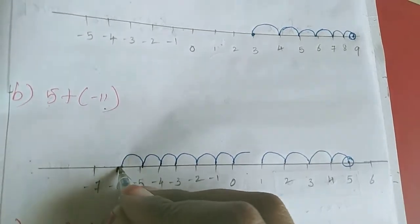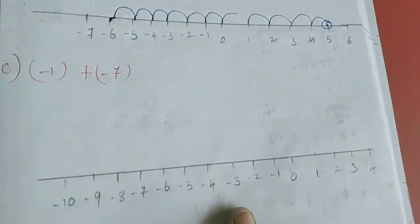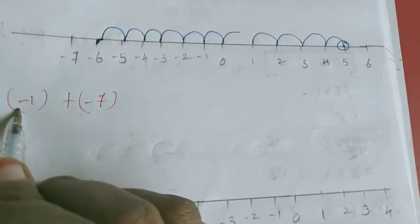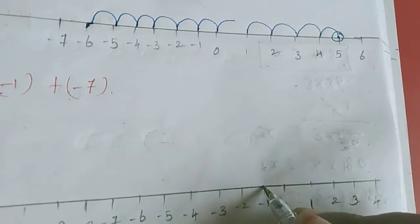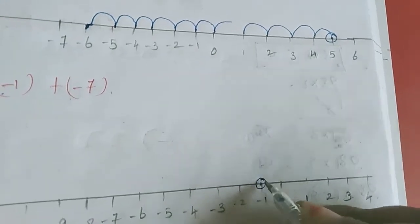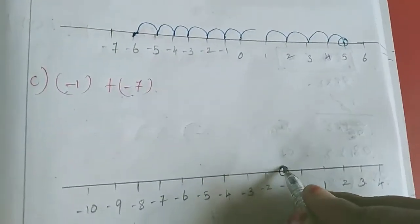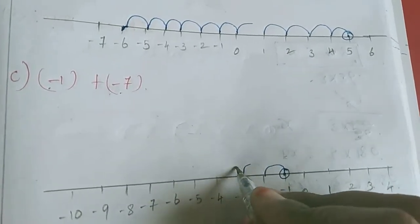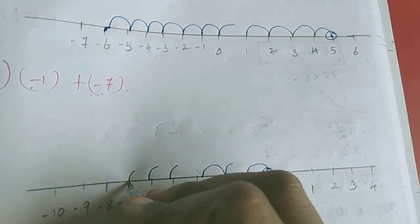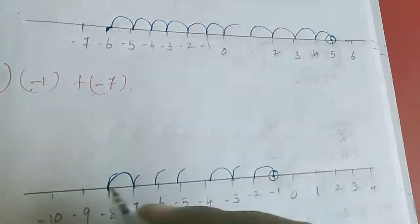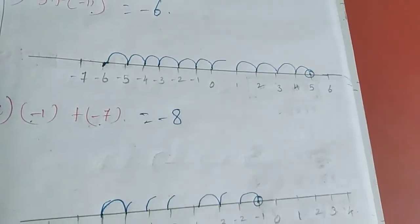Next sum: minus 1 plus minus 7. I mark minus 1 first. The next number is minus 7, so we will move to the left side: 1, 2, 3, 4, 5, 6, 7. We reach minus 8, so the answer is minus 8.